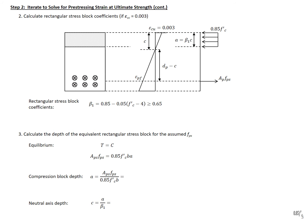Our next step is to calculate our rectangular stress block coefficients. With a top fiber strain of 0.003, we assume conventional stress block coefficients: alpha₁ = 0.85. Beta₁ is found using the ACI expression: 0.85 minus 0.05 times (f'c in ksi minus 4), giving us beta₁ = 0.75. We check this against the 0.65 minimum — it's greater, so beta₁ = 0.75.